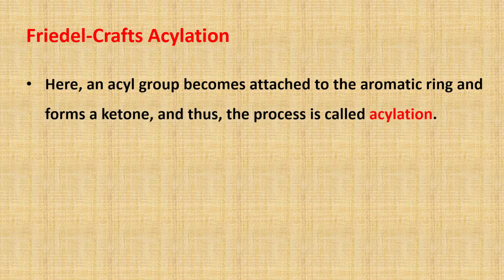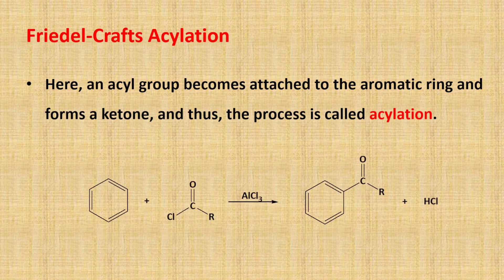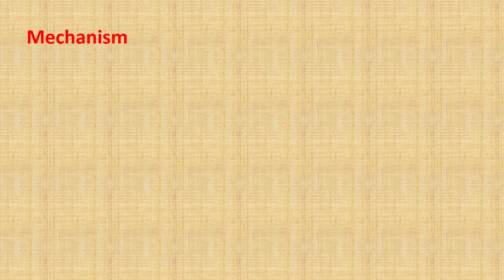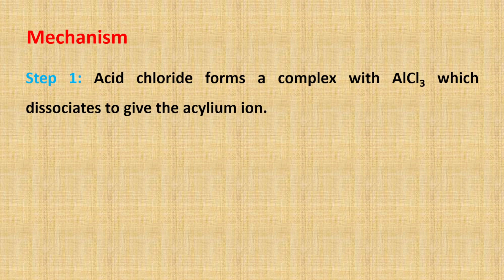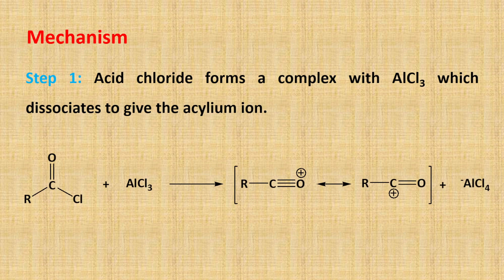Let's move to Friedel-Crafts acylation. One of the most effective modifications of the Friedel-Crafts reaction is the use of acid chloride in place of alkyl halide. An acyl group becomes attached to the aromatic ring to form a ketone, and thus the process is known as acylation. Like Friedel-Crafts alkylation, the aromatic ring undergoing substitution must be at least as reactive as halobenzene, and the reaction is also catalyzed by aluminium trichloride or any other Lewis acid. The mechanism is similar to alkylation, except it involves an acylium ion instead of a carbocation. Step 1: acid chloride forms a complex with aluminium trichloride to give the acylium ion. Unlike carbocations, the acylium ion does not rearrange, as it is resonance stabilized.